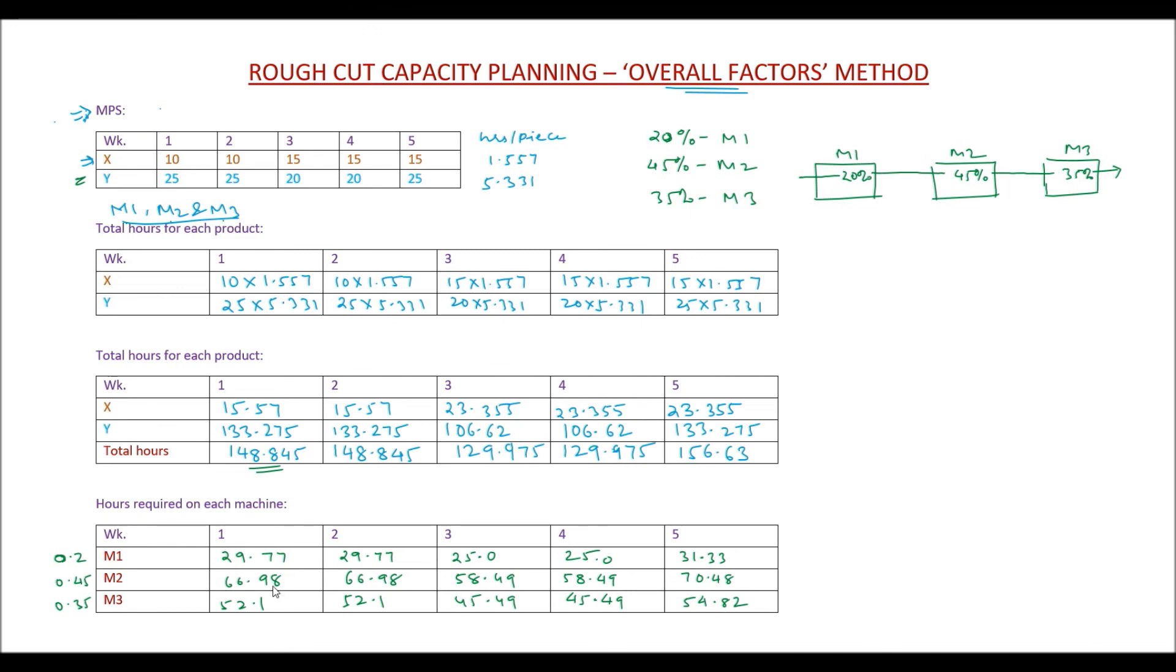Whereas M2 is required for 66.98 hours. Now depending on the capacity, if it is available for 40 hours, then this is being over-utilized. If the available capacity is 80 hours, then it is fine—it's being a little under-utilized, and so on. You need to make decisions at this point. If the capacity available is lesser than the capacity required, then either the capacity needs to be added, or the master schedule must be modified in case capacity cannot be changed.